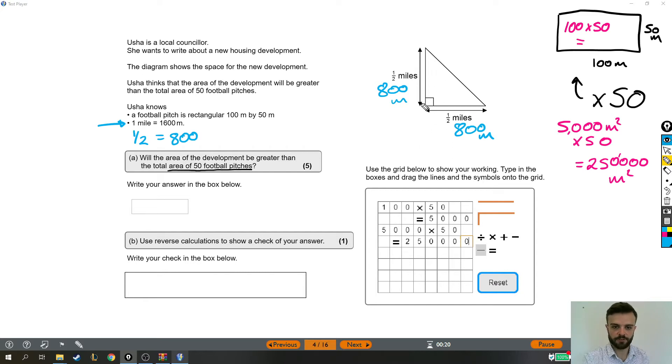Now that means we're doing base times height and then get our answer and divide by two, because that's how you find the area of a triangle. And just like last time we'll do eight times eight which is 64 and then add on four zeros. Then we divide that by two. Now 64 divided by two is 32 and then add on the four zeros, so the housing development has an area of 320,000 meters squared.